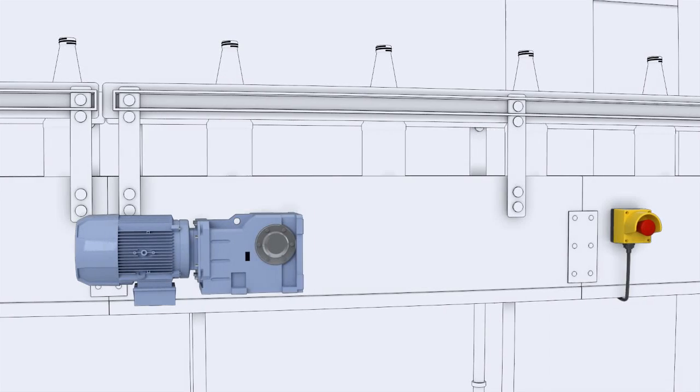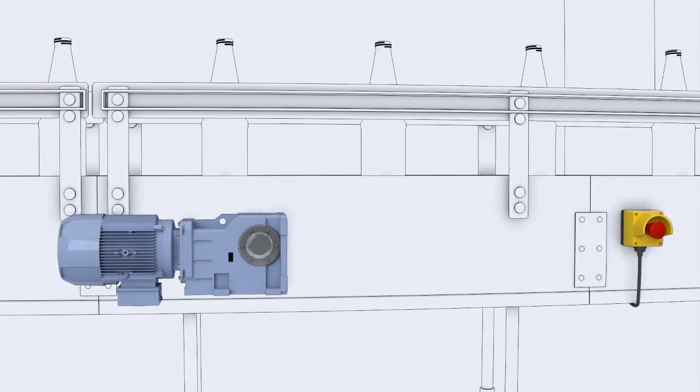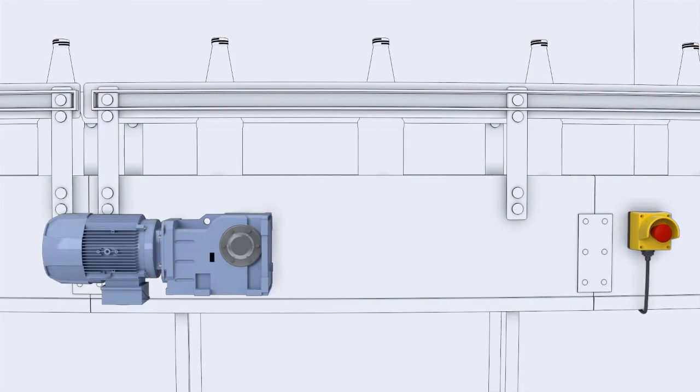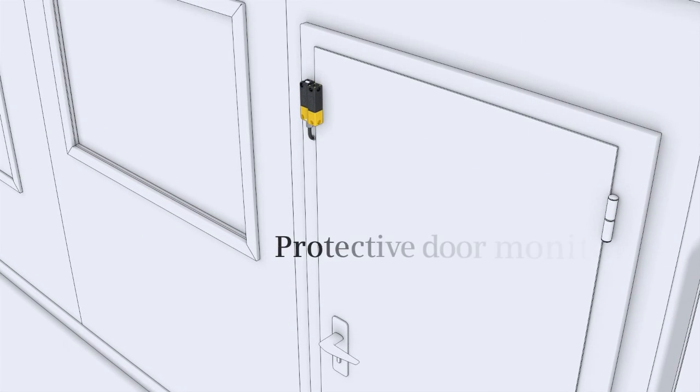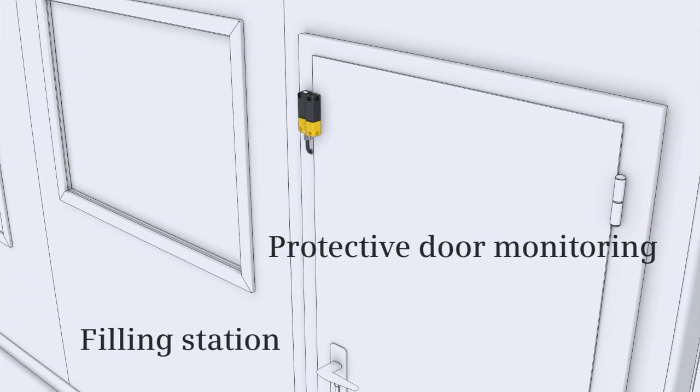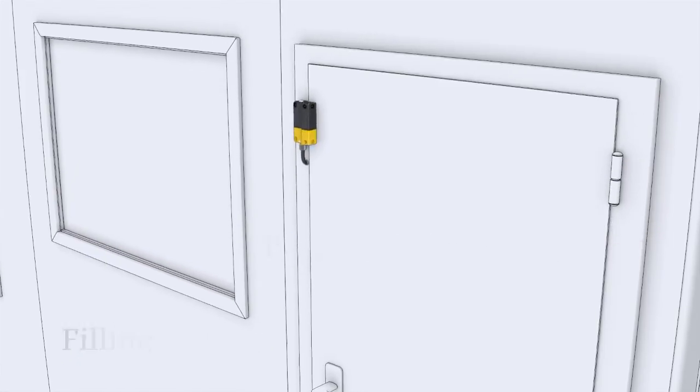With the safety relays, you implement locally limited safety applications such as an emergency stop to the conveyor belt and protective door monitoring in the filling station with a contactless safety switch.